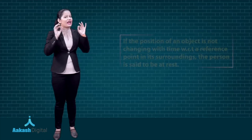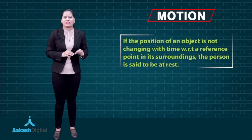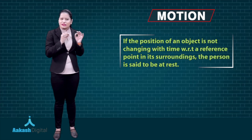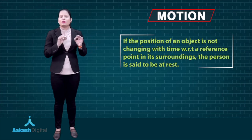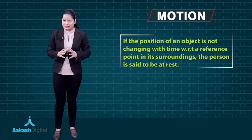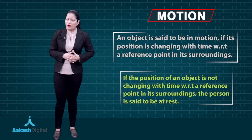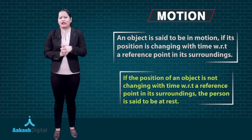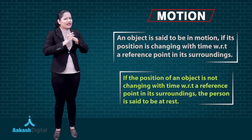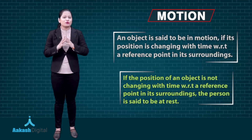An object is said to be at rest if its position does not change with time with respect to a reference point in its surroundings. So I hope the terms motion and rest are quite clear to you. Now, these terms motion and rest are relative to each other.